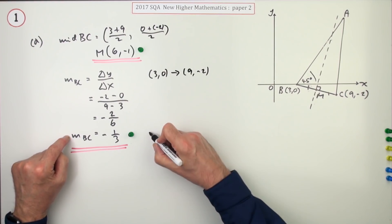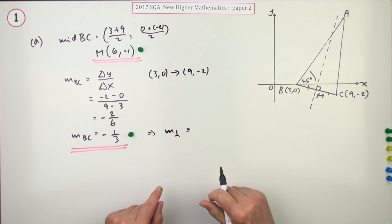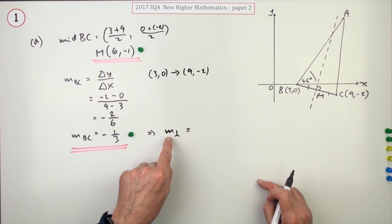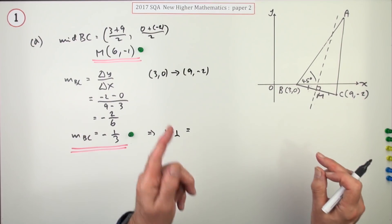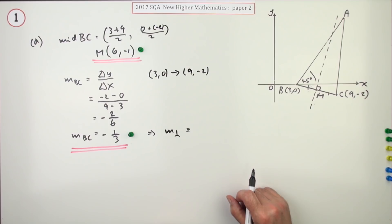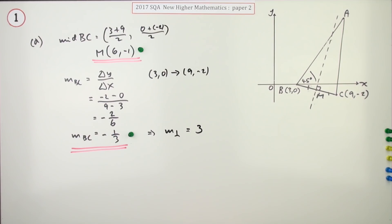Having the gradient of this line, you can now just state the gradient of the perpendicular line. You don't need to put down an equation. You can just say, well, it's the negative of it, so it'll be positive. And if you invert 1/3, you get 3/1, which is simply 3. Doing that gets you the next mark.